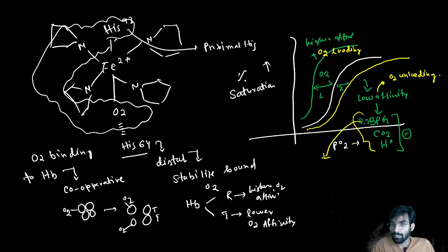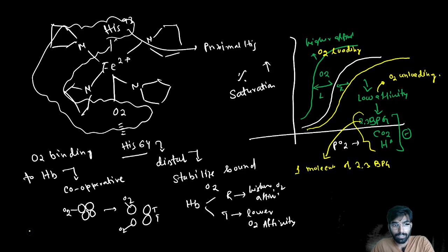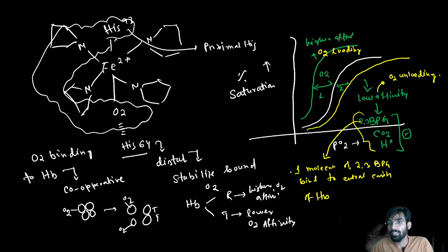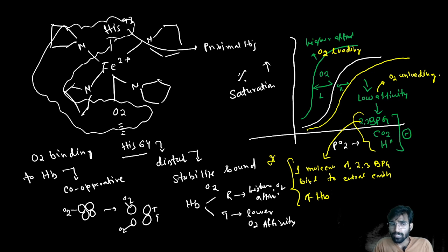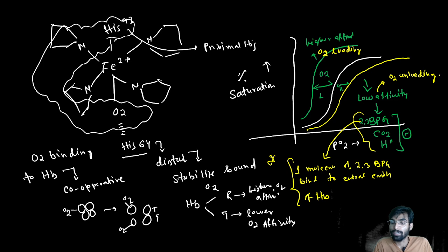One molecule of 2,3-BPG binds to the central cavity of hemoglobin — this is very important. People often ask how many BPG molecules can bind to the central cavity of hemoglobin: it's one. If you consume more acidic food or carbonated drinks, in more acidic conditions the hemoglobin's affinity for oxygen is reduced, potentially causing oxygen insufficiency.